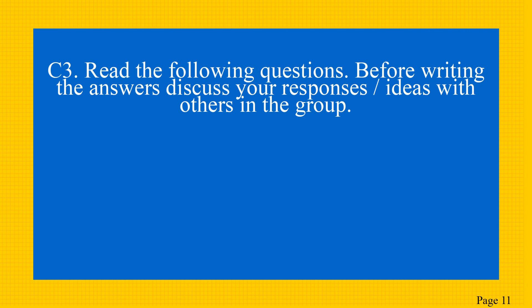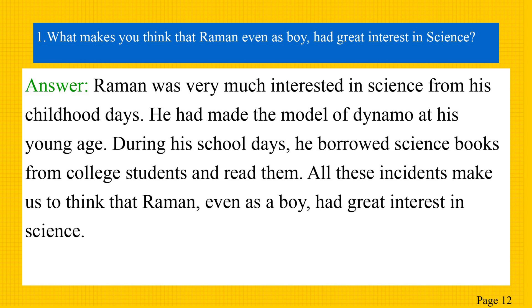C3 is in your textbook, page number 22. Read the following questions before writing the answers and discuss your responses or ideas with others in the group. The first question is: what makes you think that Raman, even as a boy, had great interest in science? The answer is: Raman was very much interested in science from his childhood days. He had made the model of a Dynamo at his young age. During his school days, he borrowed science books from college students and read them. All these incidents make us think that Raman, even as a boy, had great interest in science.